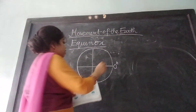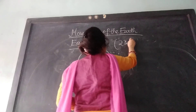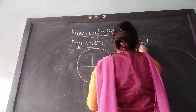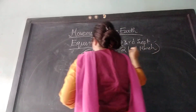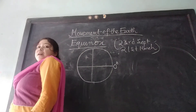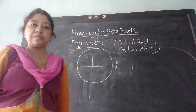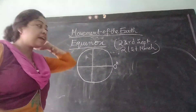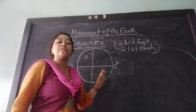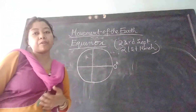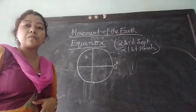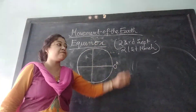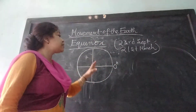Equinox occurs on two days: 23rd September and 21st March. On these two days, the days and nights are equal everywhere on the Earth's surface. The direct rays of the Sun fall on the equator. Neither the North Pole nor the South Pole is inclined away from the Sun. Every place receives an equal amount of sun rays. This position on 23rd September or 21st March is known as equinox.